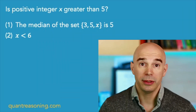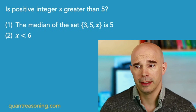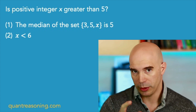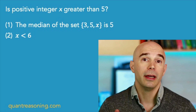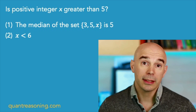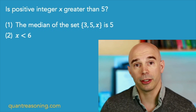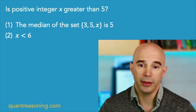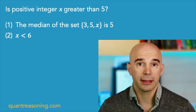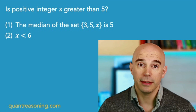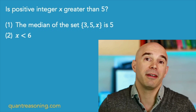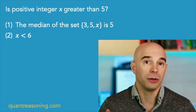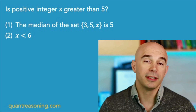One more example before we switch to the actual GMAT question. This is a yes-no data sufficiency question — a bit more sophisticated. It's asking: is positive integer X greater than five? Note that X being a positive integer is a big piece of information. We recommend starting with statement two because it seems simpler. Statement two tells us X is less than six. Given that X is a positive integer, it can't be greater than five — to be greater than five as a positive integer, you'd have to be at least six. So statement two gives us a definitive no.